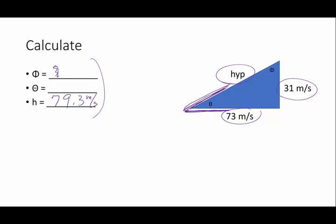If I want to find theta, I know the adjacent side, and this is adjacent because it's next to my angle. This is the opposite side. So the tangent of theta is going to be the opposite divided by the adjacent. The opposite is 31. The adjacent is 73.